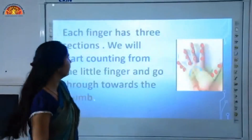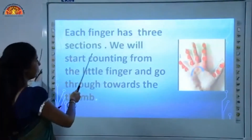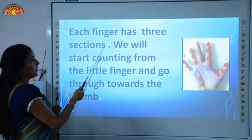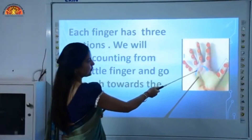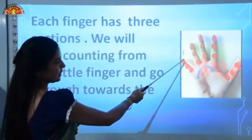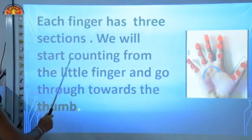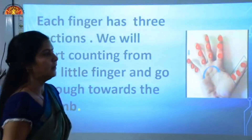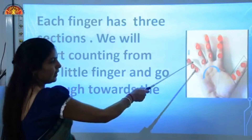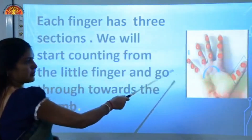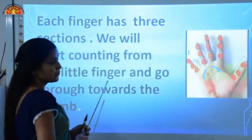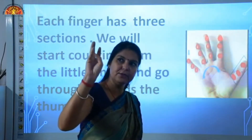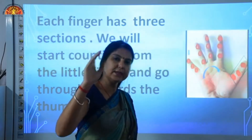Each finger has three sections. You all have your hand, and in your hand there are fingers, and each finger has three sections. We will start counting from the little finger and go towards the thumb. We use the thumb for counting the numbers. This one is your little finger and we will start counting: one, two, three, four, five, six, and so on.